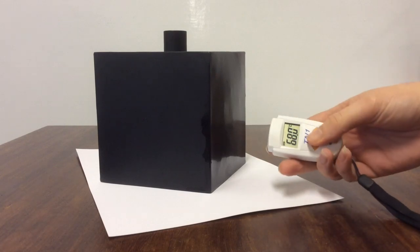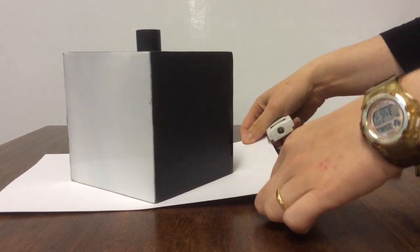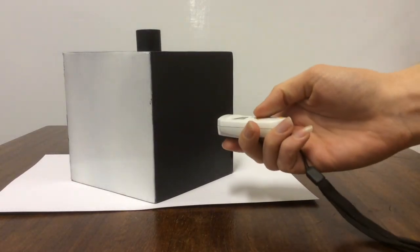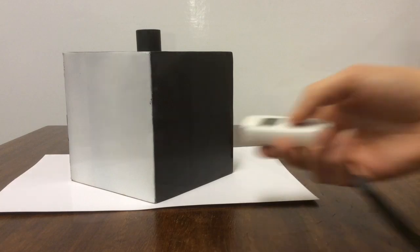Now I'll test the black shiny surface, which is 68 degrees Celsius. And finally I'll test the matte black surface. See if that's different as well. 66.3 degrees.